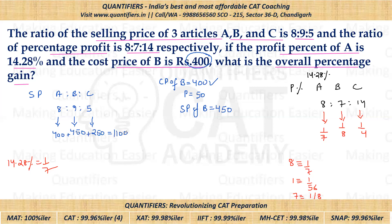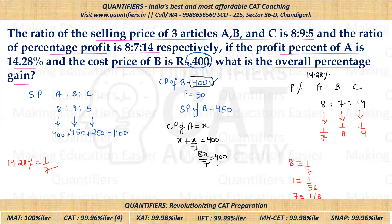Now we have the total selling price, but we also need the total cost price. The cost price of B is given as ₹400. For A, let cost price = x. Since profit percentage of A is 1/7, we have: x + x/7 = 8x/7 = selling price of A = ₹400. So x = 400 × 7/8 = ₹350. Cost price of A is ₹350.